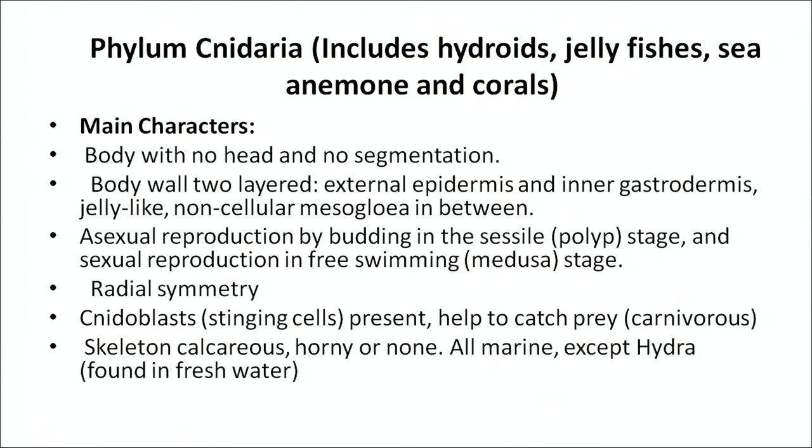Asexual reproduction takes place by budding in the polyp or sessile stage, and sexual reproduction takes place in the free-swimming stage called the medusa stage. So it has two stages of reproduction: the sessile or polyp stage and the medusa stage. It has radial symmetry. All are marine except hydra, which is found in fresh water. Either it is fixed, like hydra, sea anemones, and corals, or it exists in free-floating form, like jellyfish.